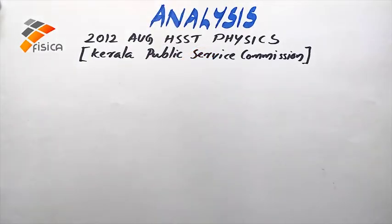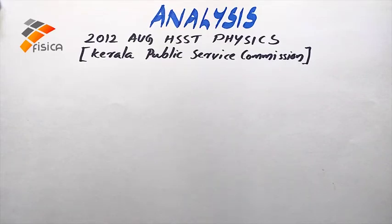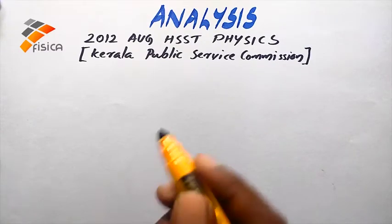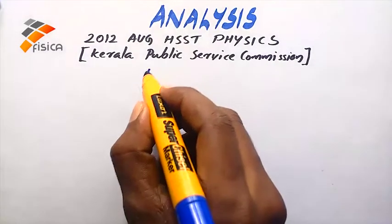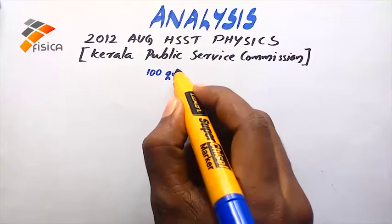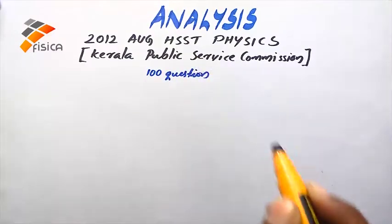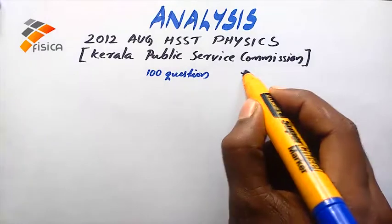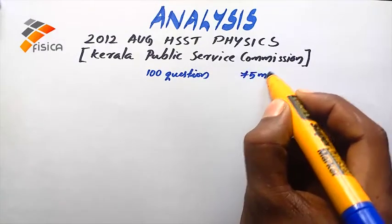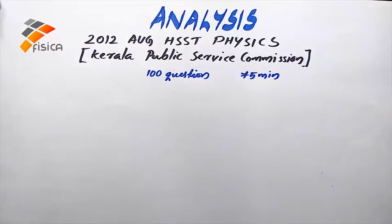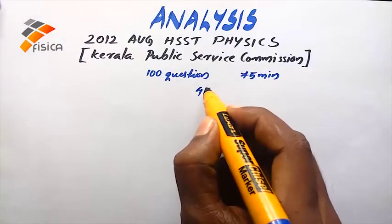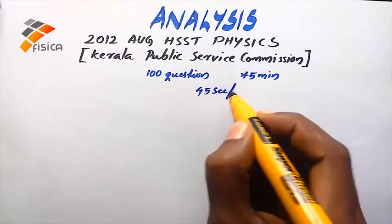This is an analysis of the 2012 August HSSD Physics exam conducted by the Kerala Public Service Commission. The examination contains a total of 100 questions and the allotted time is 75 minutes, so on average you get 45 seconds to solve each problem.